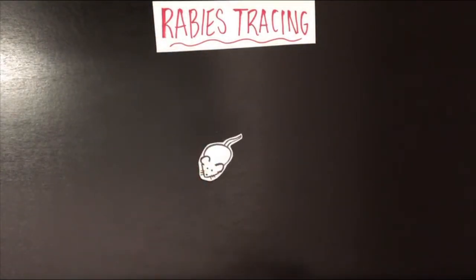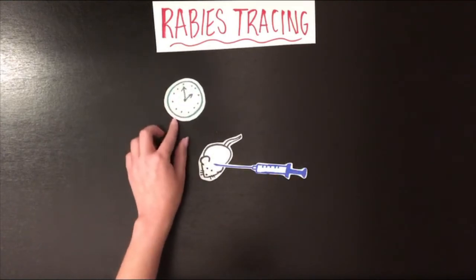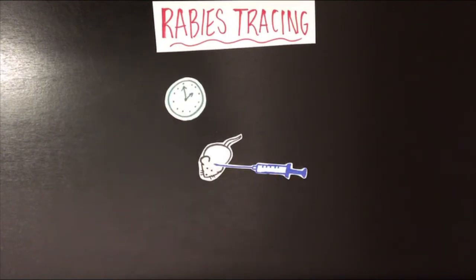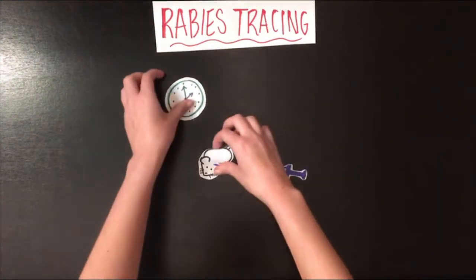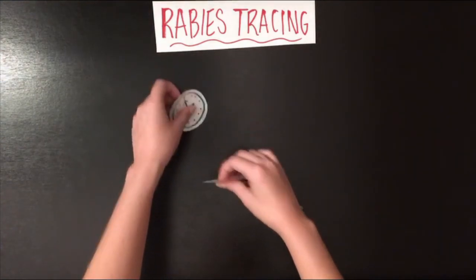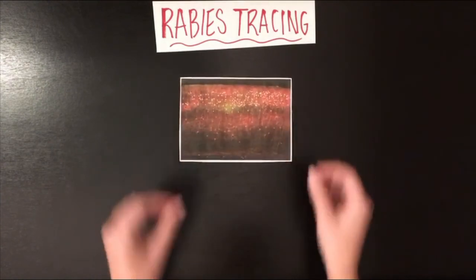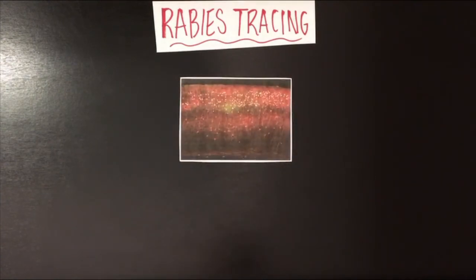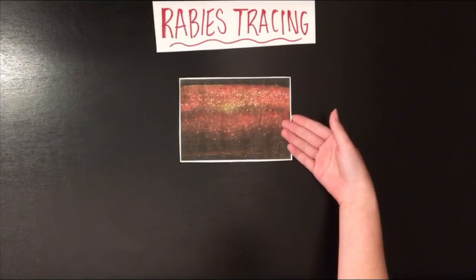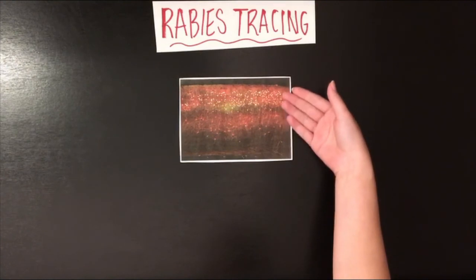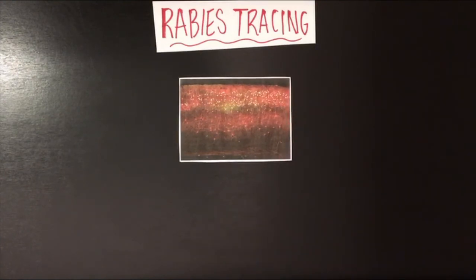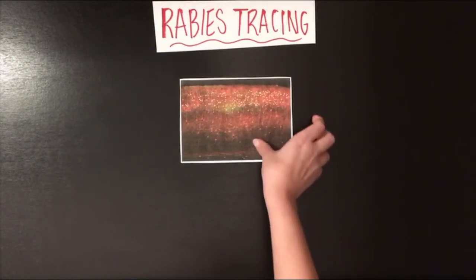In an experiment, the rabies virus would be injected into a live lab mouse or other test subject in the brain tissue of interest. The virus is then left to incubate in the live mouse for about seven days, after which the researchers can image the harvested brain tissue with fluorescent microscopy.